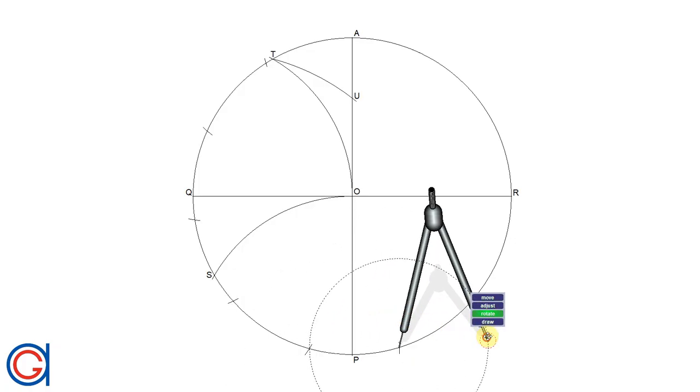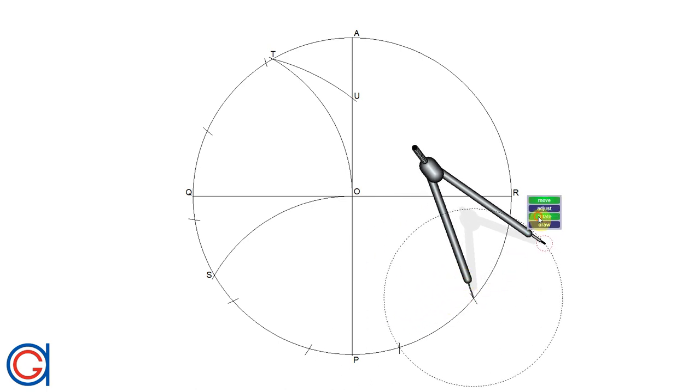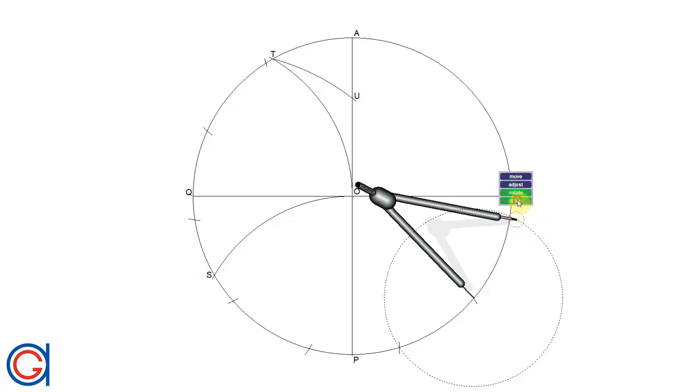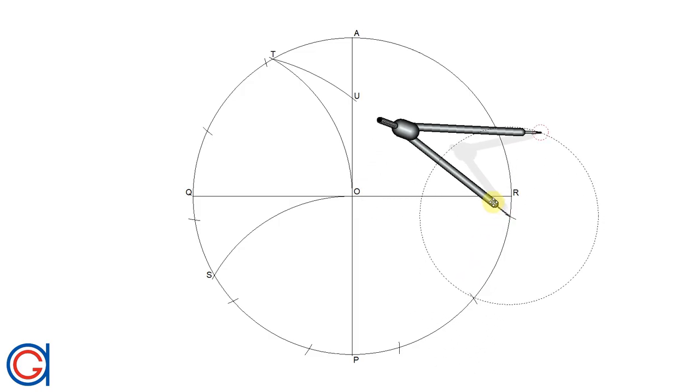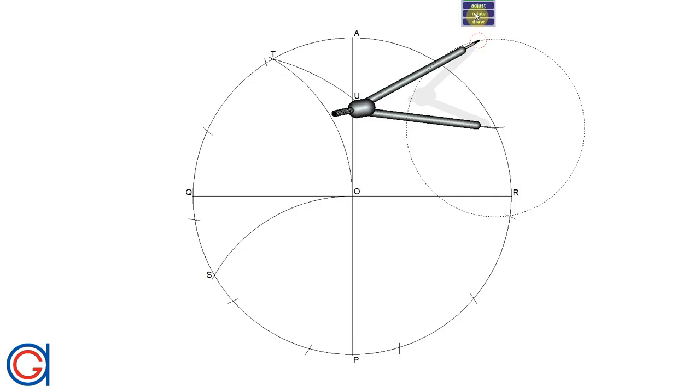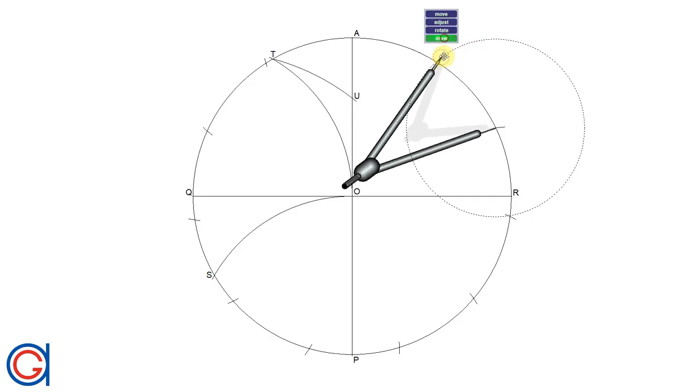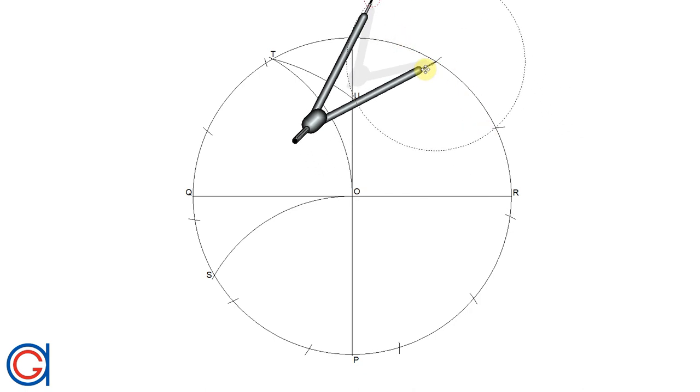But hopefully, if you are working as accurate as possible, our final arc should touch exactly on point A when we scribe our last arc. So this is our second to last one. Okay, and if we've been working with precision accuracy, our final arc should cut exactly at point A, as can be seen here.